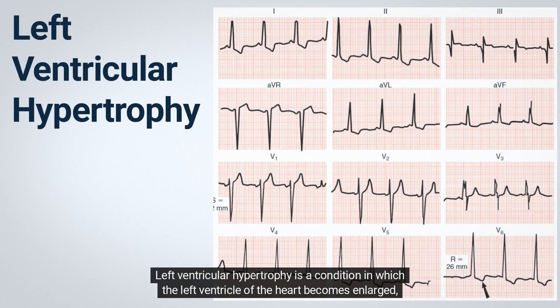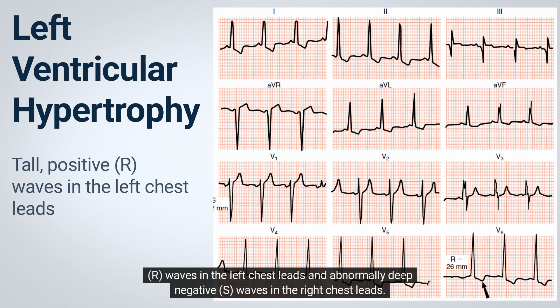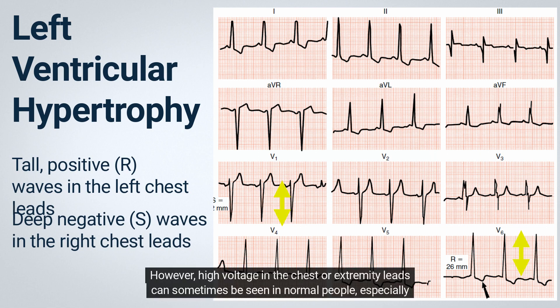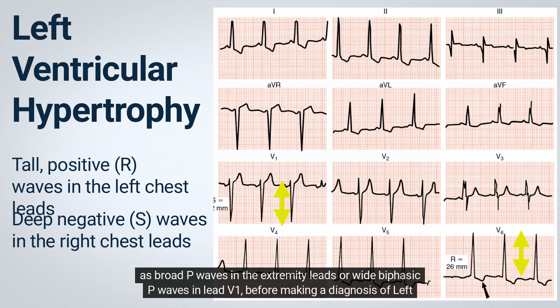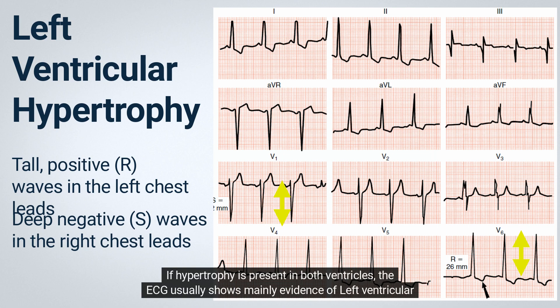Left ventricular hypertrophy is a condition in which the left ventricle of the heart becomes enlarged, often due to increased workload. The ECG changes produced by left ventricular hypertrophy are predictable and include abnormally tall positive R-waves in the left chest leads and abnormally deep negative S-waves in the right chest leads. However, high voltage in the chest or extremity leads can sometimes be seen in normal people, especially athletes and young adults. Therefore, it is important to look for associated ST-T changes and signs of left atrial overload, such as broad P-waves in the extremity leads or wide biphasic P-waves in lead V1, before making a diagnosis of left ventricular hypertrophy. If hypertrophy is present in both ventricles, the ECG usually shows mainly evidence of left ventricular hypertrophy.